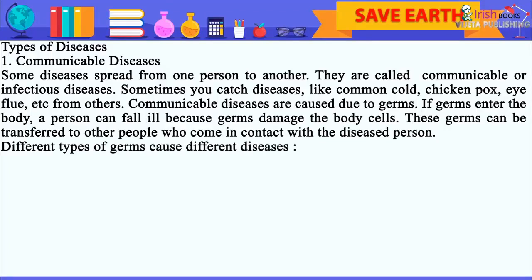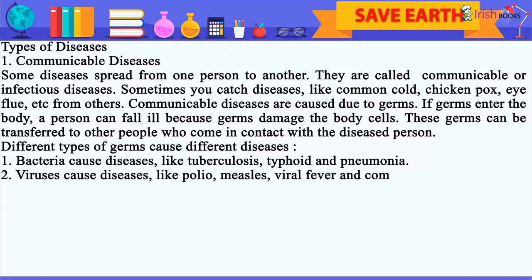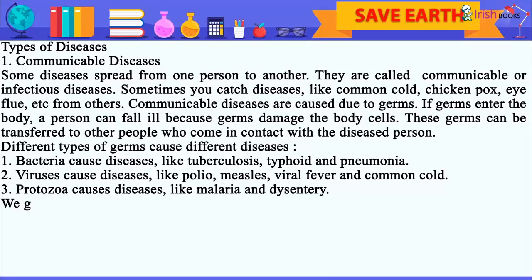Different types of germs cause different diseases. 1. Bacteria cause diseases like tuberculosis, typhoid and pneumonia. 2. Viruses cause diseases like polio, measles, viral fever and common cold. 3. Protozoa cause diseases like malaria and dysentery.